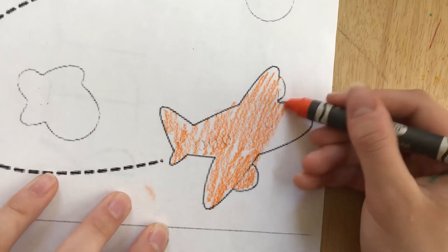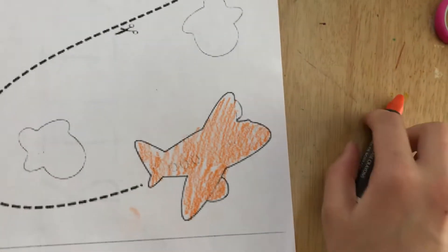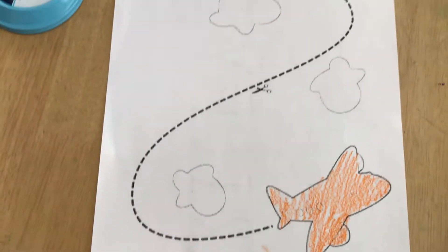And remember let's hold our crayon or marker the right way with our crab claw grip. Now I'm going to color in my clouds.